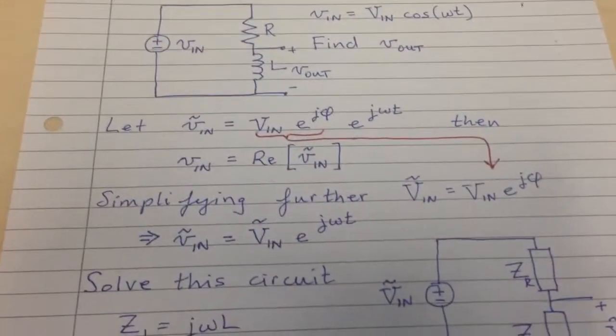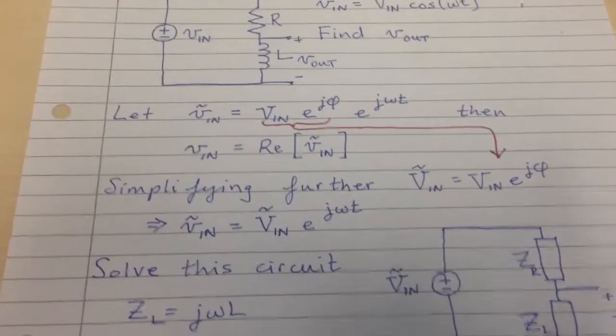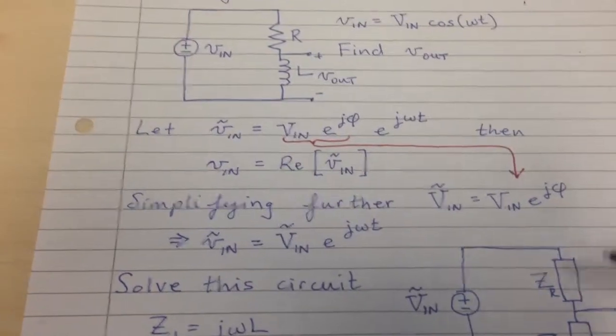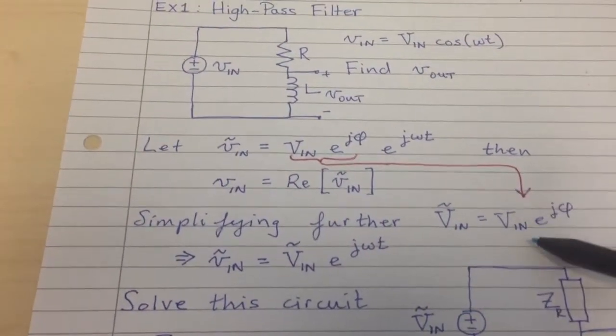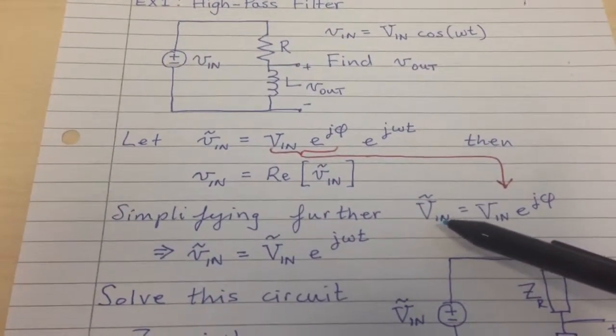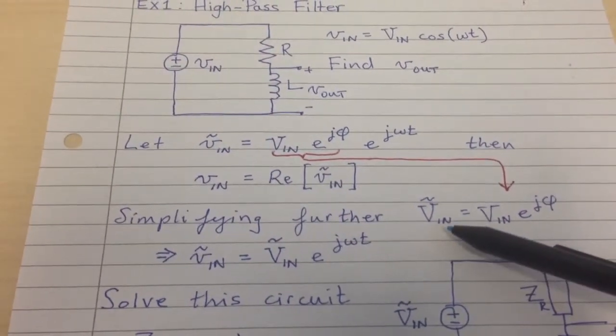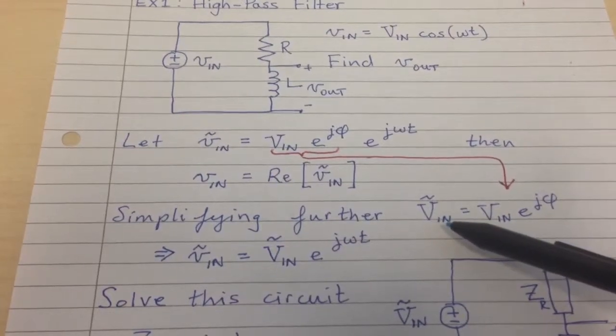We can simplify things or make them more complex, however you choose to view it, I guess, another way by taking this one more step, by taking this V_in e^(jφ) and calling it capital V_in tilde.